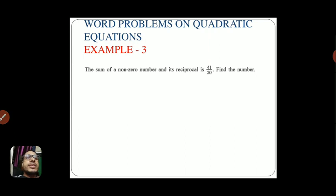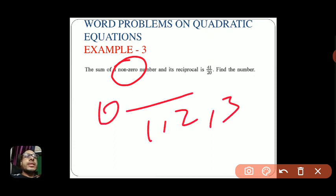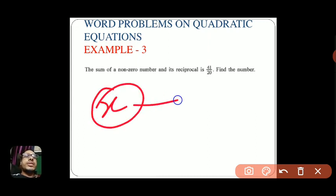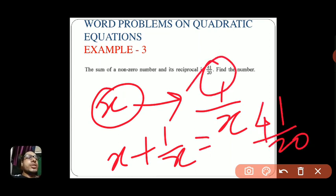Moving to example three: the sum of a non-zero number and its reciprocal is 41/20. Find the number. Non-zero means any number apart from zero. If we declare the number as x, its reciprocal is 1/x, and their sum equals 41/20.